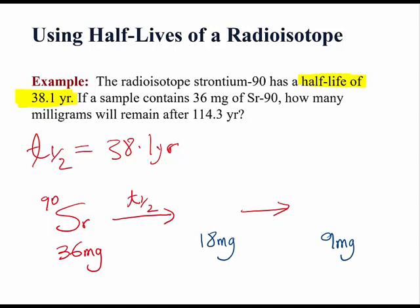Remember, one half-life is equal to 38.1 years. The second half-life is also 38.1 years. So far, we have spent 76.2 years.